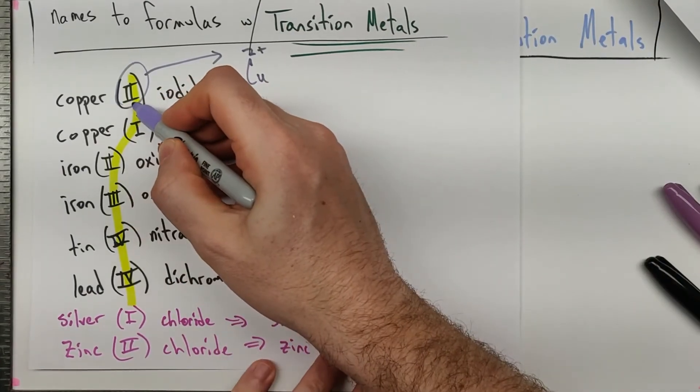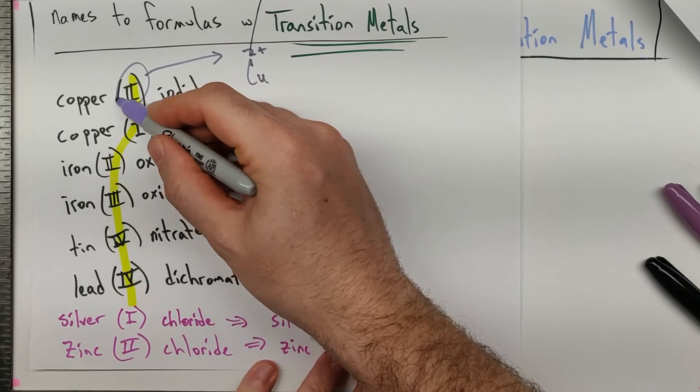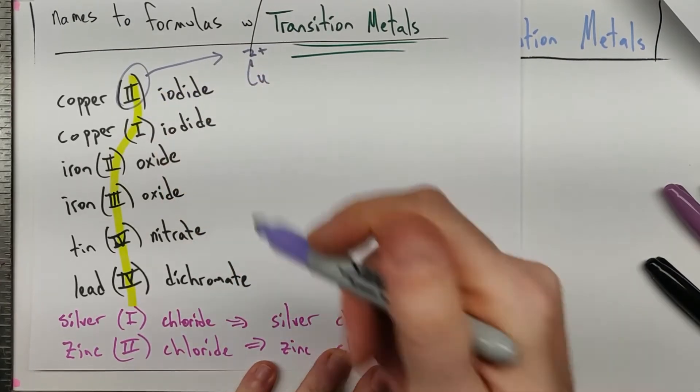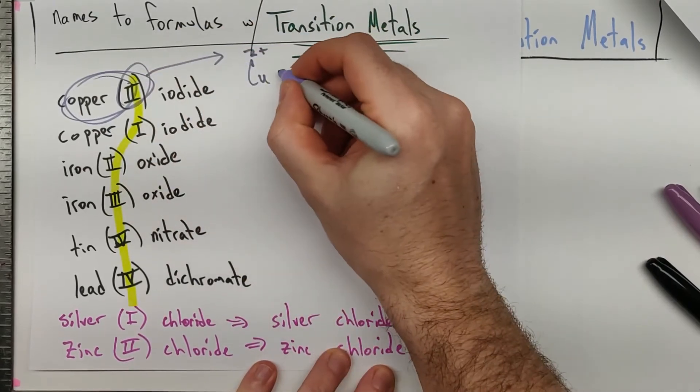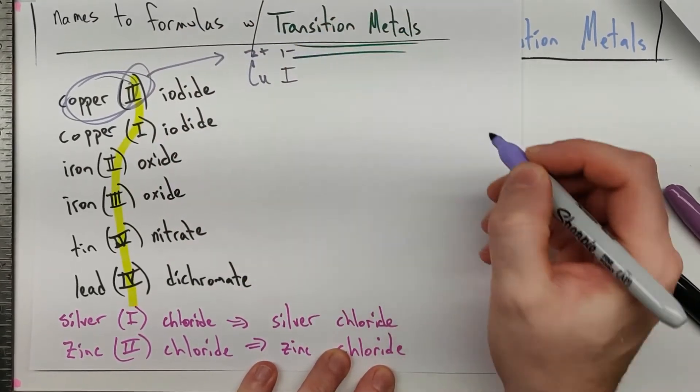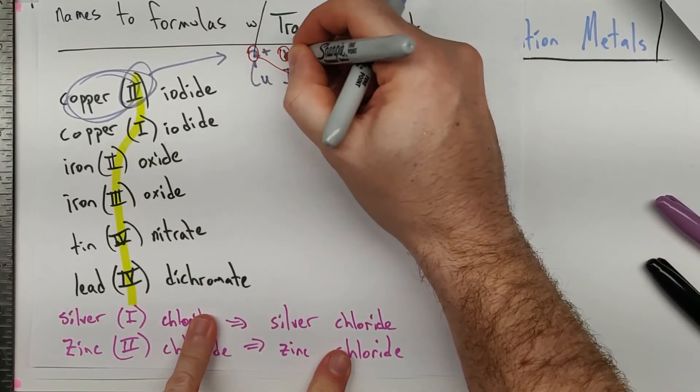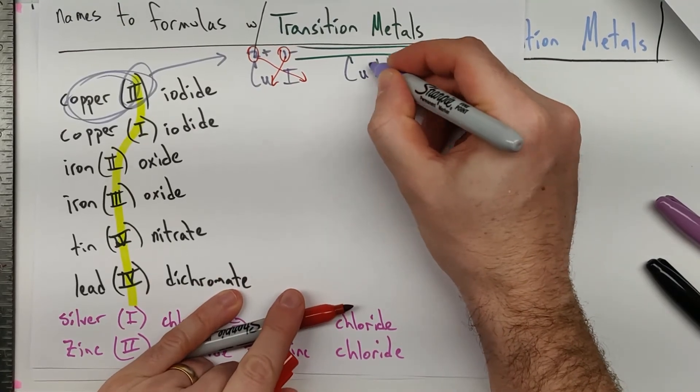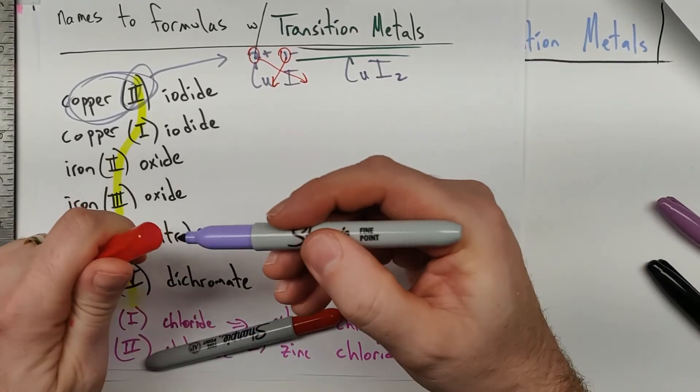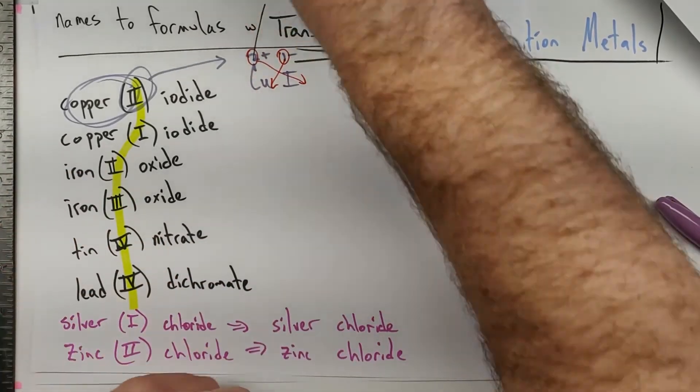So if copper is Cu, this right here is telling us it is a 2+. And let me just tell you, the number one mistake people make is they think that this roman numeral is telling you how many of something you have or a charge on the anion. No. This and this go together every single time. So copper is a 2+, iodine group 17, 1-. When we crisscross and reduce those, 2 is going down, 1 over there, and you end up with CuI2.